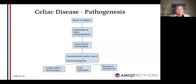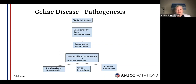In terms of the pathogenesis for celiac disease, the protein in gluten is called gliadin, and within the intestine that is deaminated by tissue transglutaminase, and then consumed by the antigen-presenting cells — the macrophages — which causes a hypersensitivity type 4 reaction. And then you get the classic triad of lymphocytes, crypt hyperplasia, and then blunting of the intestinal villi.